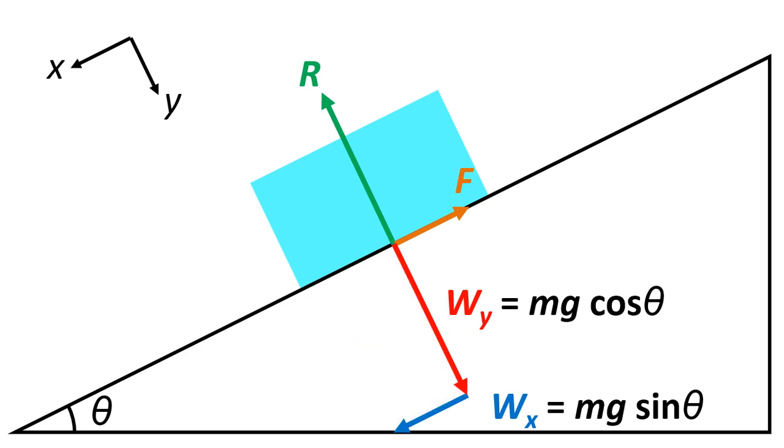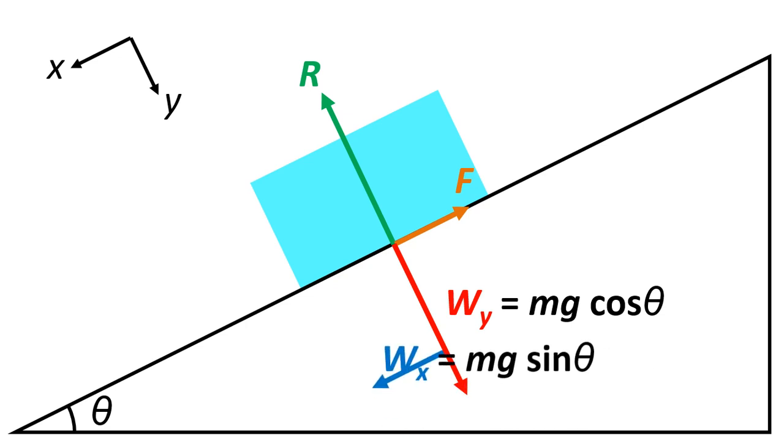Now we can get rid of that triangle and the weight because we've now got it as these two separate components. I'm just going to move the wx over to here. Now we can see that wx is balancing out the friction and wy is balancing out the reaction force.